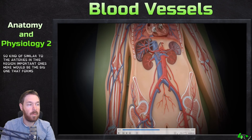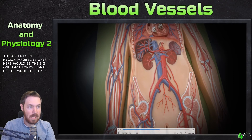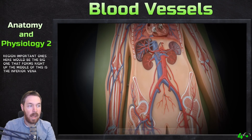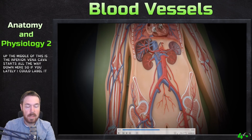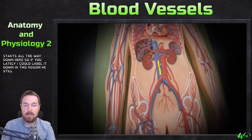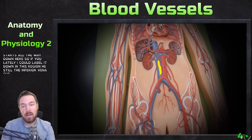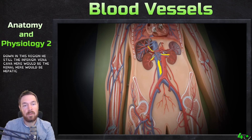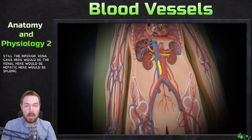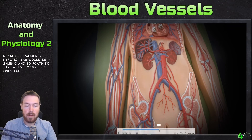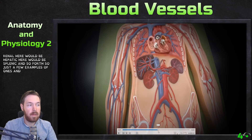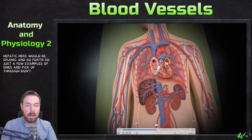The big vessel that forms right up the middle is the inferior vena cava. It starts all the way down here, and this entire vessel is still the inferior vena cava. Along it we have the renal, hepatic, and splenic veins, just as a few examples of the tributaries draining into it.